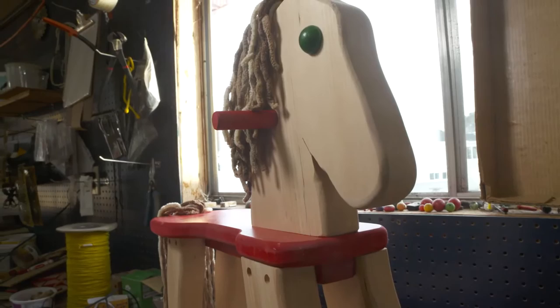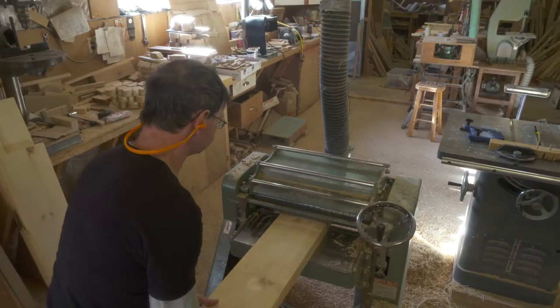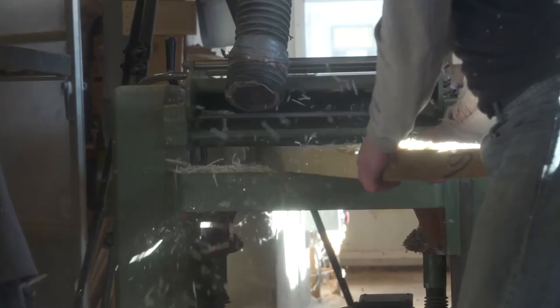The Toymaker of Lunenburg begins their rocking horse production by planing the lumber. It takes several passes through the planer to create nice, even surfaces on both sides of the wood. This piece is locally sourced 2x8 pine.